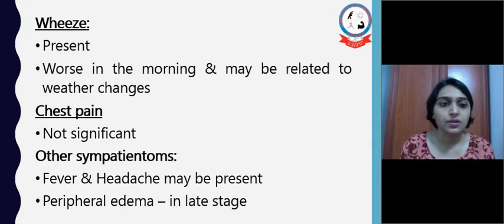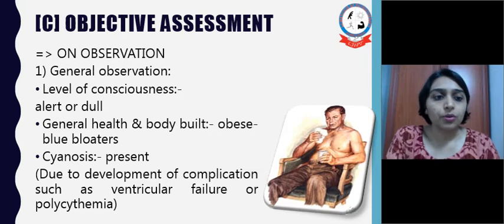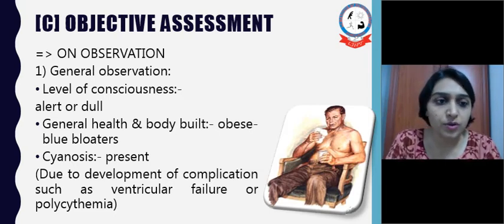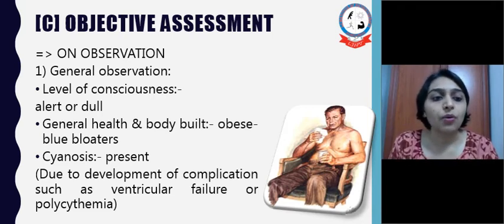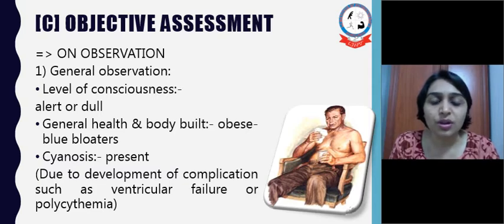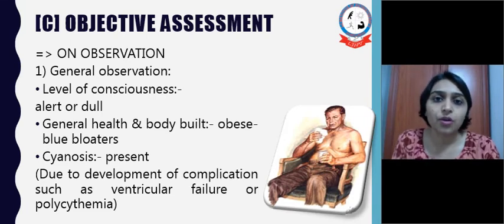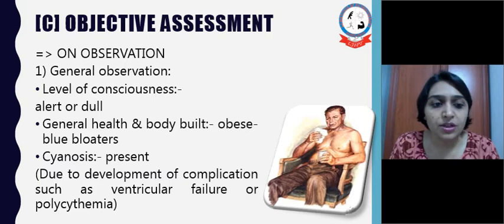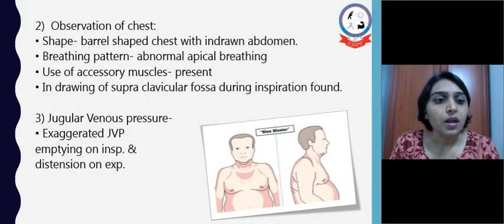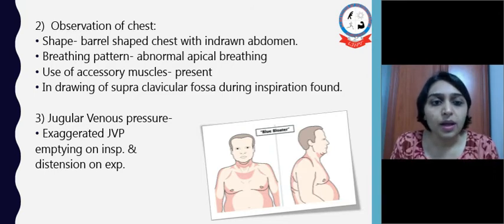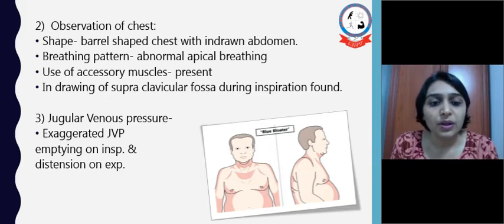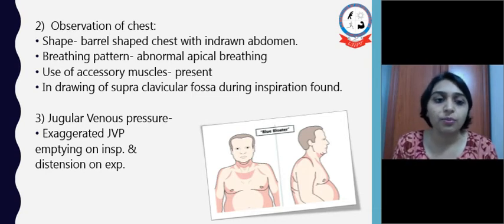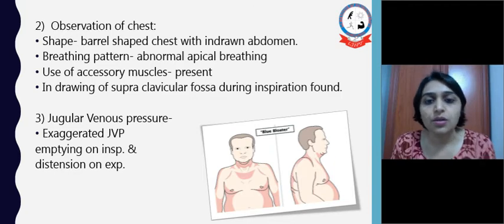Chest pain is not very significant in chronic bronchitis, and other symptoms like fever and headache may be present. Peripheral edema is present in later stages. In objective assessment, the physiotherapist observes: general observation includes level of consciousness — the patient may be found altered or dull. These patients are usually obese, falling into the category of blue bloaters. Cyanosis is usually present due to complications such as ventricular failure or polycythemia. The shape of the chest is usually barrel-shaped. Breathing pattern shows abnormal apical breathing with use of accessory muscles and indrawing of the supraclavicular fossa during inspiration. Jugular venous pressure is usually exaggerated, with emptying on inspiration and distension on expiration.